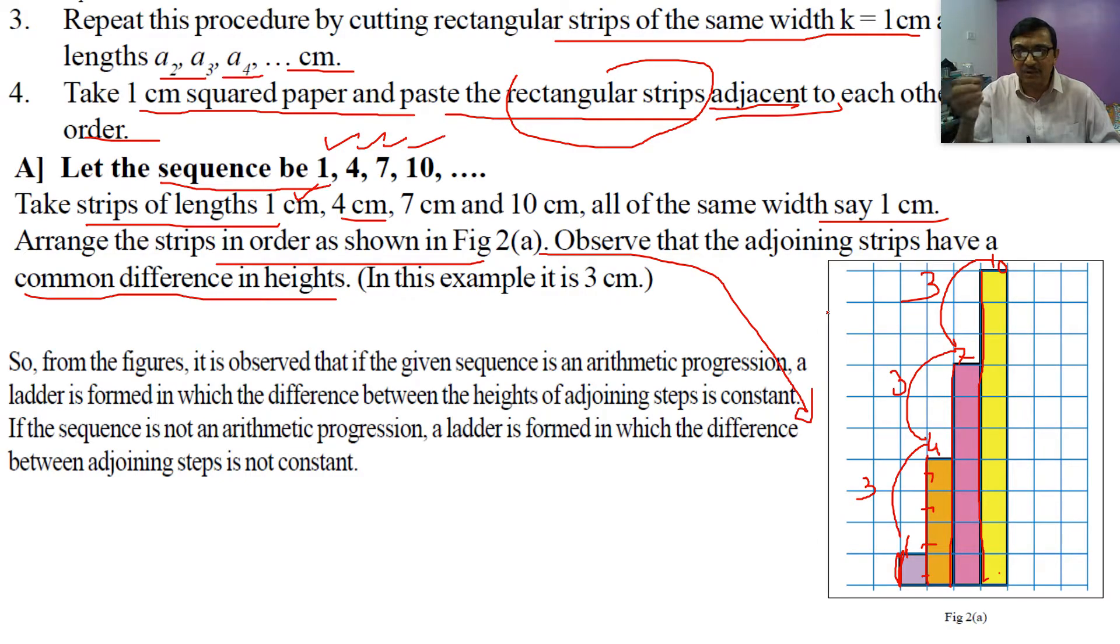If you want to apply the general term an = a + (n-1)d or sum of n terms Sn = n/2[2a + (n-1)d], the most important thing is knowing the common difference. I showed you here: 4 minus 1, 7 minus 4, 10 minus 7. In all cases, the common difference is equal, meaning 1, 4, 7, 10 is an AP.